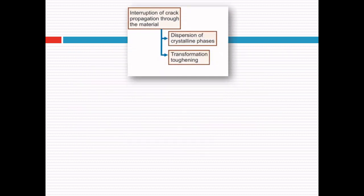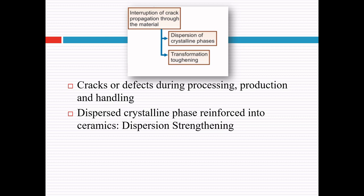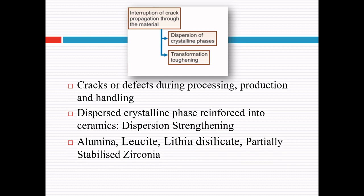The next method of strengthening is by interruption of crack propagation through the material, which can be done by dispersion of crystalline phases and also by transformation toughening. The strength of dental ceramics is controlled by the size of the cracks or defects introduced during processing, production and handling. In dispersion strengthening, we reinforce ceramics with a dispersed phase of a different material capable of hindering crack propagation. Dental ceramics which primarily contain a glass phase can be strengthened by increasing the crystal content of alumina, lucite, lithium disilicate, partially stabilized zirconia, etc. This toughening depends on the crystal type, size, volume fraction, inter-particle spacing and relative thermal expansion coefficient related to the glass matrix.